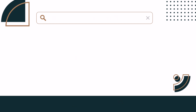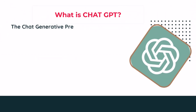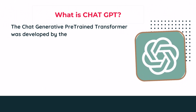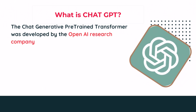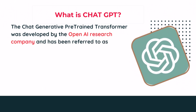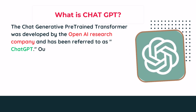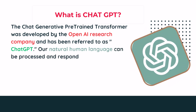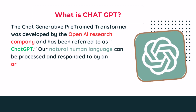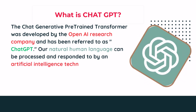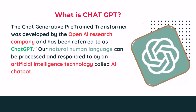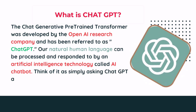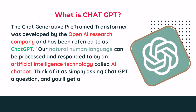What is the meaning of ChatGPT? The Chat Generative Pre-trained Transformer was developed by the OpenAI Research Company and has been referred to as ChatGPT. Our natural human language can be processed and responded to by an artificial intelligence technology called an AI chatbot. Think of it as simply asking ChatGPT a question, and you'll get an answer.